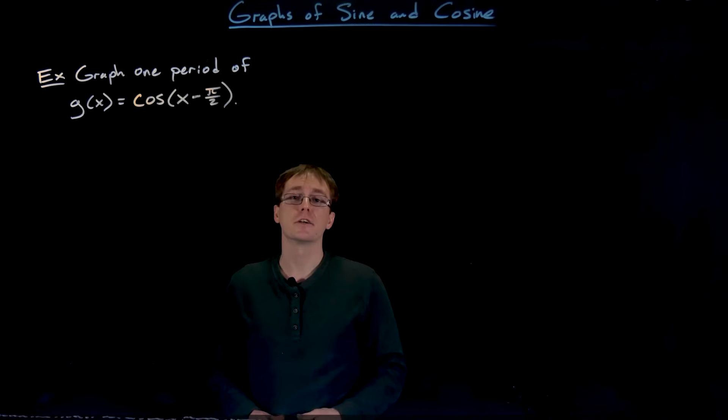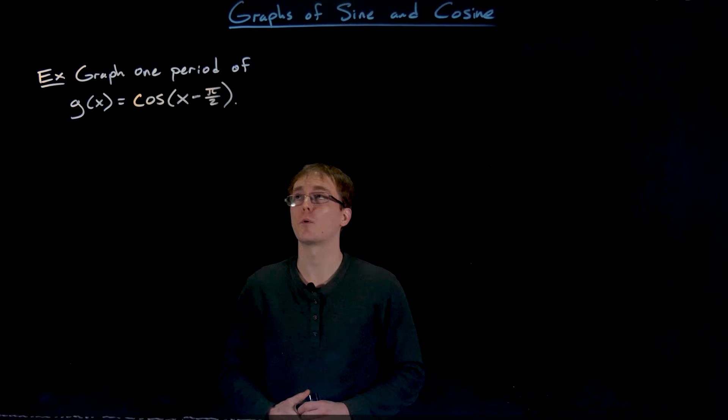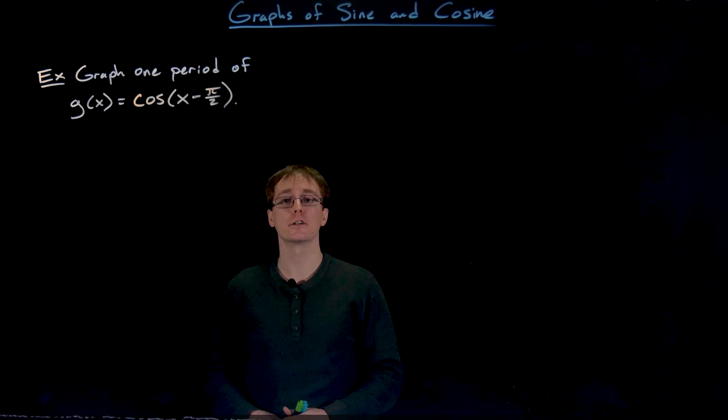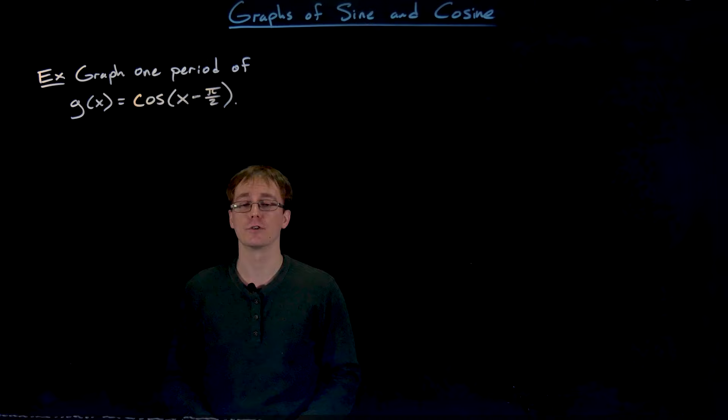Hey everyone, I have another example of a relatively straightforward transformation of one of our sine or cosine functions. In this example we are asked to graph one period of the function g(x) which is defined as cosine of x minus π over 2.